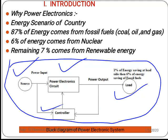The source means the available single-phase or three-phase supply. The power electronic circuit includes power electronic converters like rectifiers, choppers, inverters, voltage regulators, and cycloconverters. The load can be DC motors, induction motors, synchronous motors, and many other appliances. The power electronic system provides whatever the load requires.